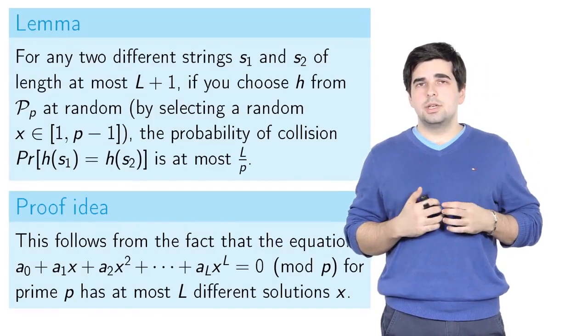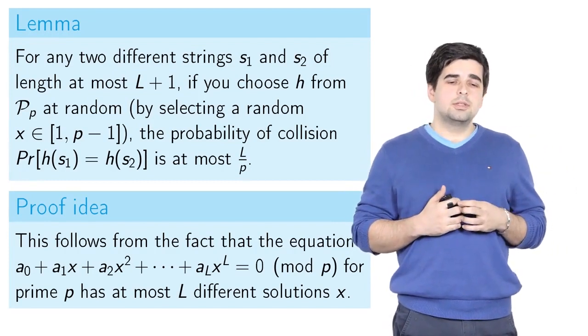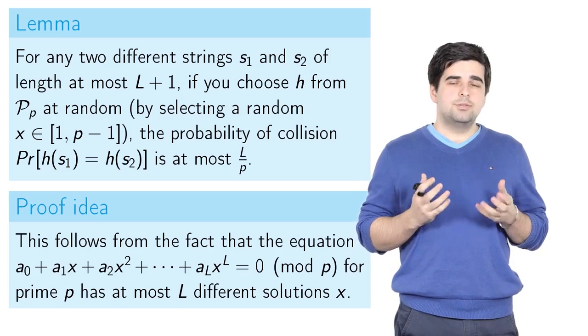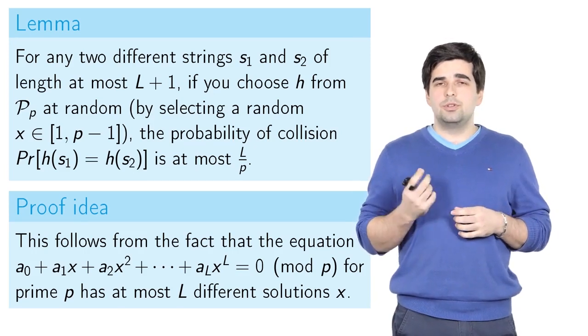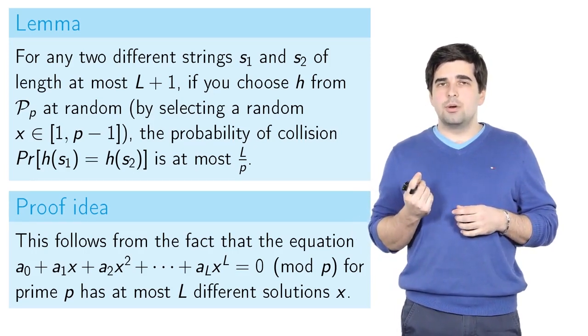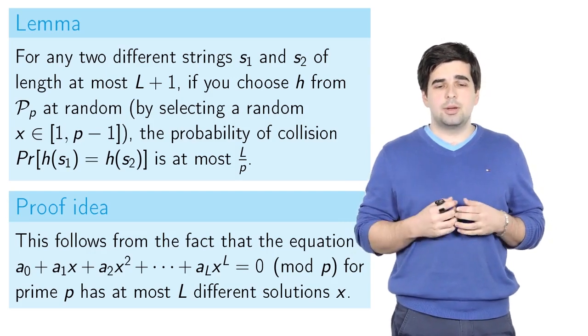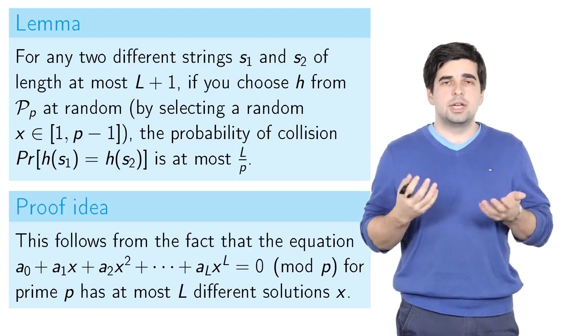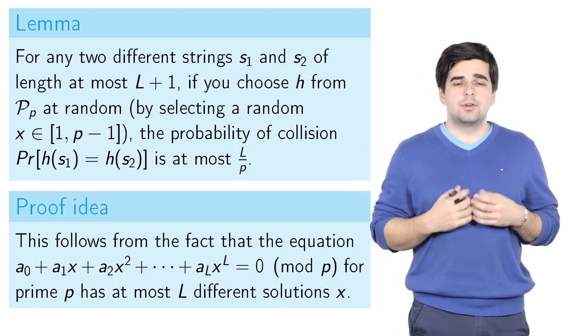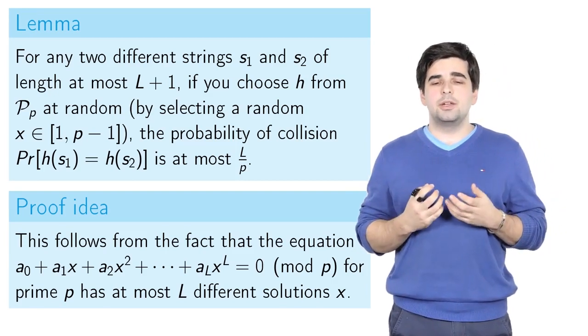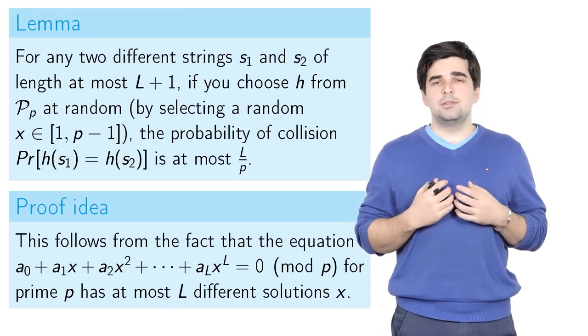So now about the efficiency of our polynomial family. The first lemma says that for any two different strings s₁ and s₂ of length at most L+1, if you choose a random hash function from the polynomial family by selecting a random value of parameter x from 1 to p-1, then the probability of collision on these two different strings is at most L/p.